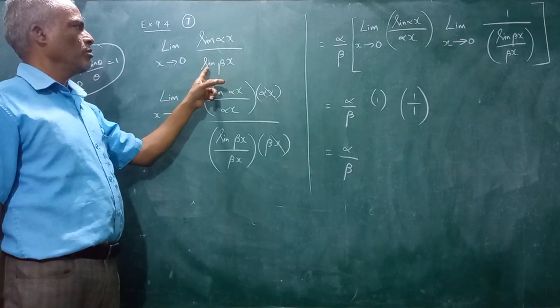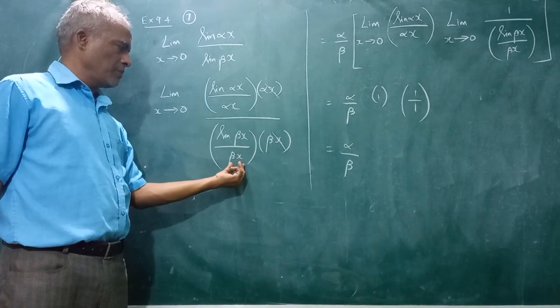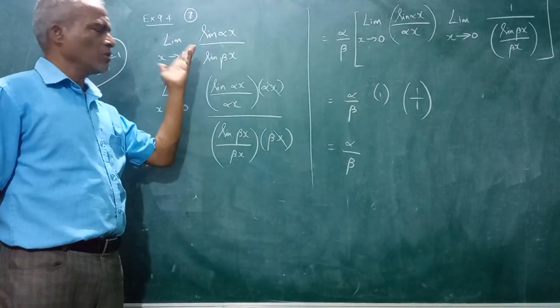Similarly for the denominator term sin beta x, you have sin beta x by beta x multiplied and divided by beta x by beta x, so these two terms get cancelled, you will get the original equation.